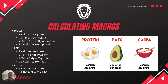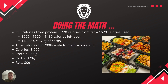Now for carbs — carbs also have 4 calories per gram, and you're basically going to fill the rest of your calories with carbs. So doing the math: 800 calories from protein plus 720 calories from fat equals 1,520 calories used so far. We're eating 3,000 calories total, so 3,000 minus 1,520 equals 1,480 calories left over. Divide 1,480 by 4 and that gives us 370 grams of carbs.